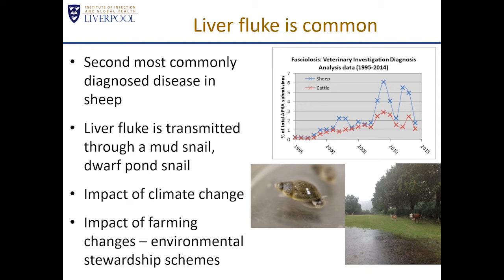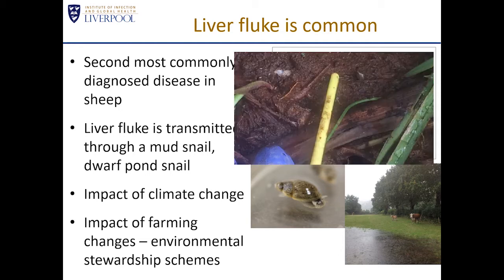Because of the need for wet conditions and mild temperatures, we're seeing that climate change is having a big impact on the prevalence of liver fluke. Our studies, together with those from other groups, have shown that projected climate change predictions over the next few decades suggest liver fluke will become even more of a problem. Changing farming practices — such as environmental stewardship schemes — can also create environments suitable for the snail intermediate host. These snails are tiny — only five to seven millimetres — mud-coloured, sitting on mud, and they are hard to spot.